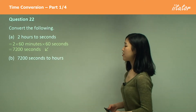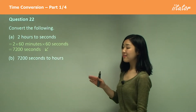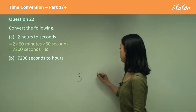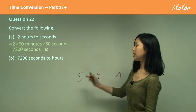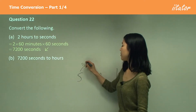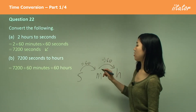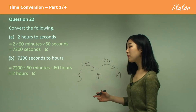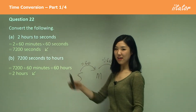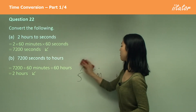7200 seconds to hours. From seconds to hours — we're going from seconds and minutes to hours. Small to large, we divide. So we divide by 60 and then divide by 60 again. That should give two hours, because we started with two hours. Draw a diagram if you need to.